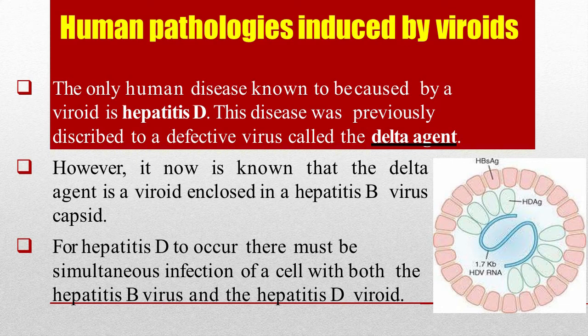However, it is now known that the delta agent is a viroid enclosed in a Hepatitis B virus capsid. For Hepatitis D to occur, there must be simultaneous infection of a cell with both the Hepatitis B virus and the Hepatitis D viroid.